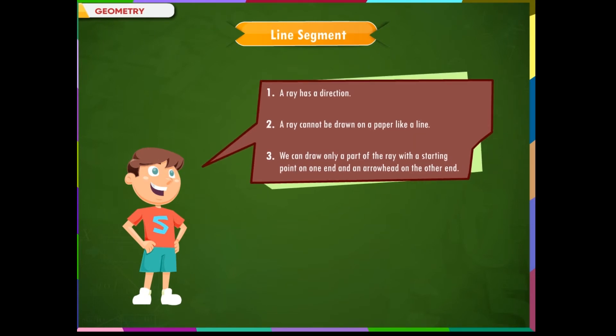Remember: 1. A ray has a direction. 2. A ray cannot be drawn on a paper like a line. 3. We can draw only a part of the ray with a starting point on one end and an arrowhead on the other end.